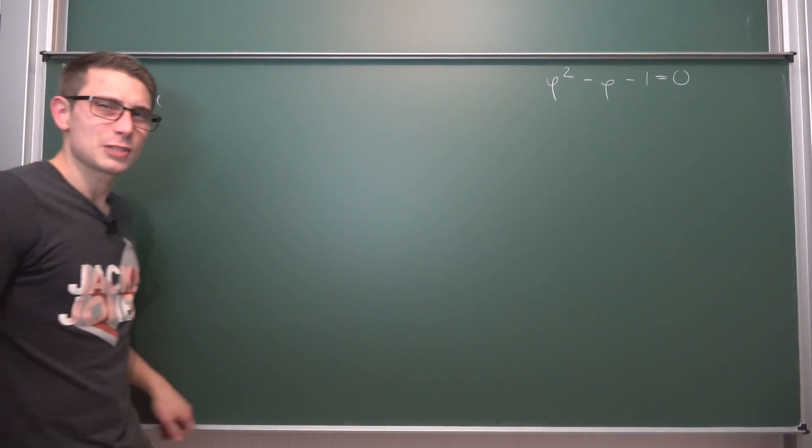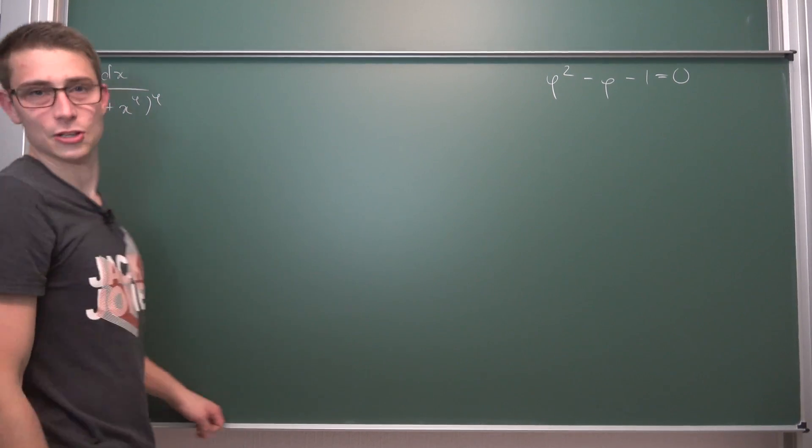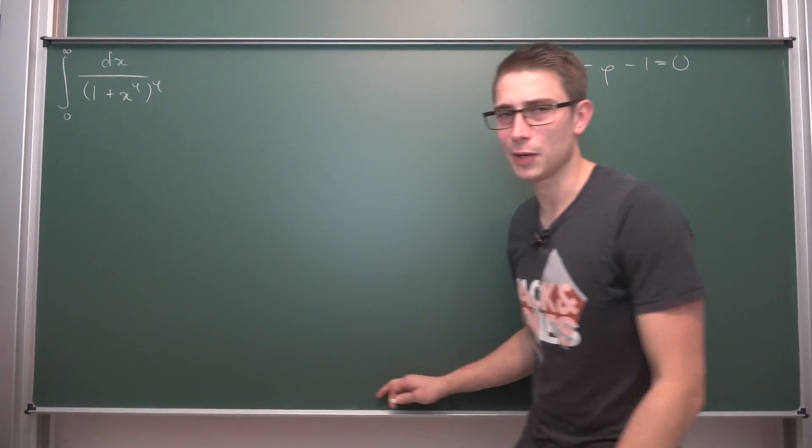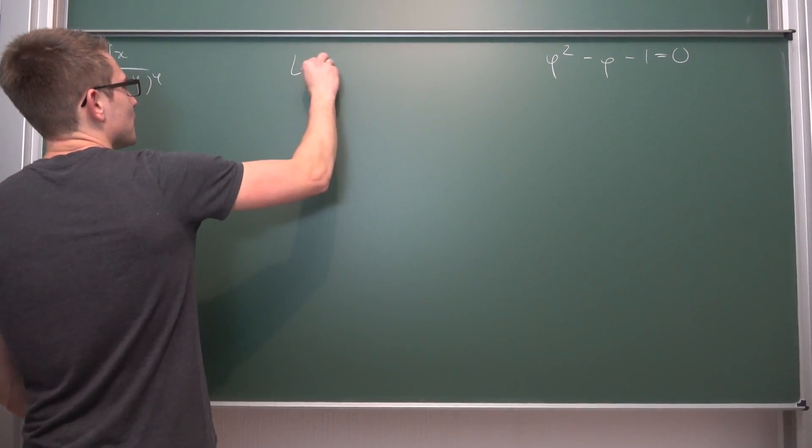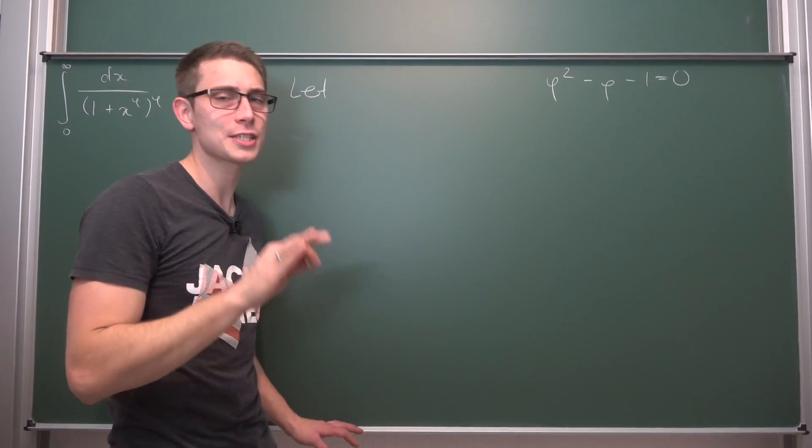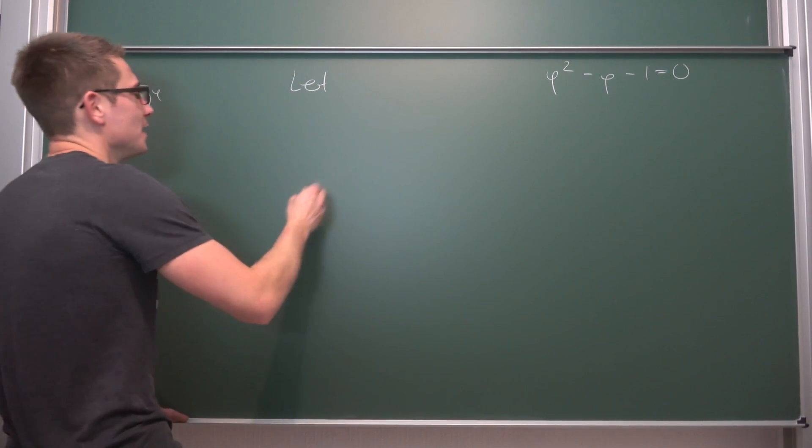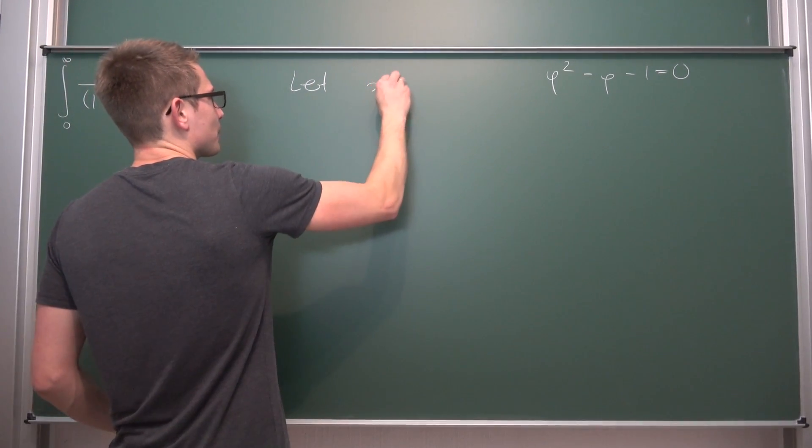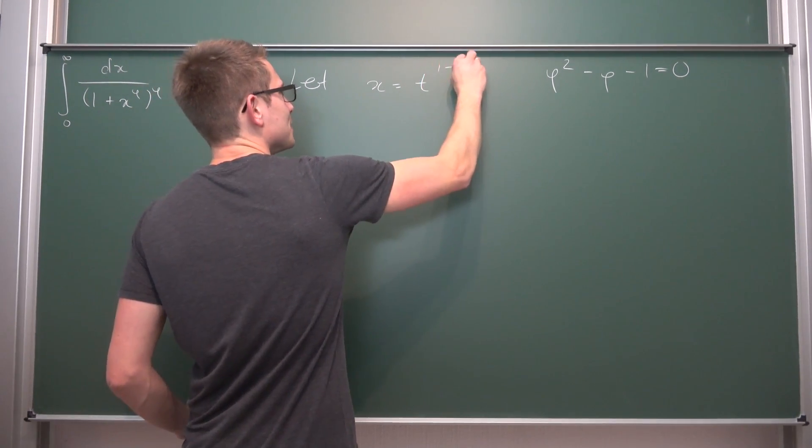So the first thing that we are going to do is introduce a tiny little substitution because this fucker down here is annoying the hell out of me, x to the phi power. Who needs that? So what we are going to do is let x, our original variable, be equal to t to the 1 minus phi.